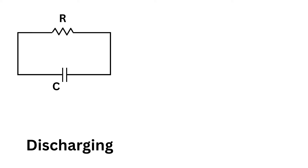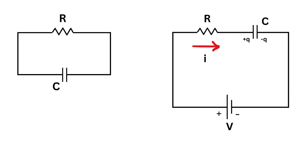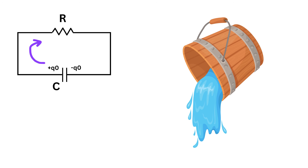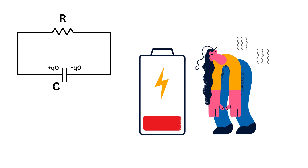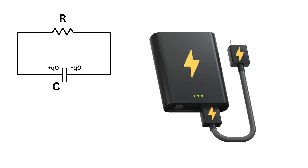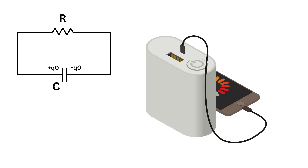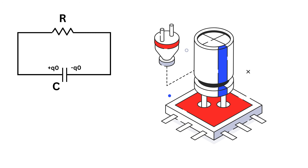Now let's understand the discharging case. Suppose we have a capacitor that is already charged — say, we had earlier connected it to a battery and now it holds some charge and voltage across its plates. If we remove the battery and simply connect this charged capacitor across a resistor, the capacitor starts releasing its stored energy. This stored charge begins to flow through the resistor, creating a current in the circuit. But unlike a battery, the voltage of the capacitor keeps dropping as it discharges, because it's losing charge over time. That's why capacitors can act like temporary batteries in many circuits, giving quick bursts of power and then fading out.